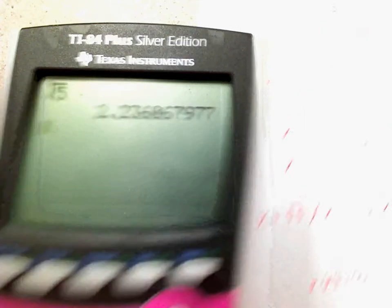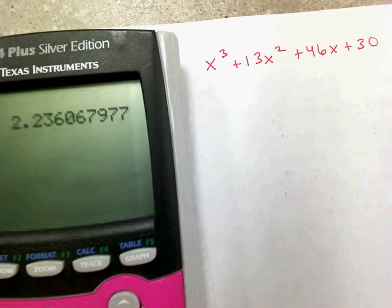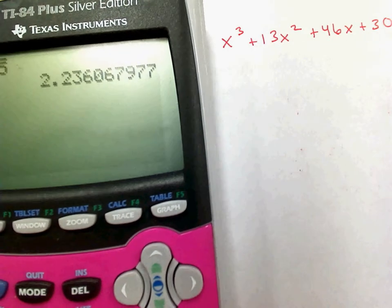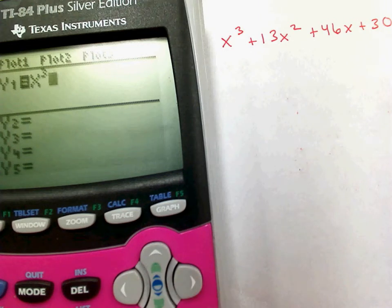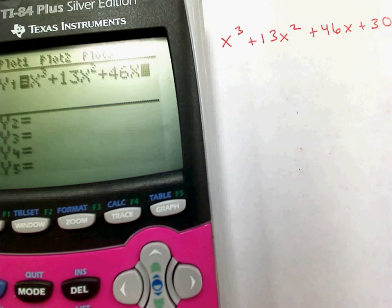All right, so last one. Let's do this one. So, what if I tell you this is the function, and then I want you to find all the roots. Well, then you need to go to y equals and back it in again. Okay, so x raised to the third, and then plus 13x squared, plus 46x, plus 30.